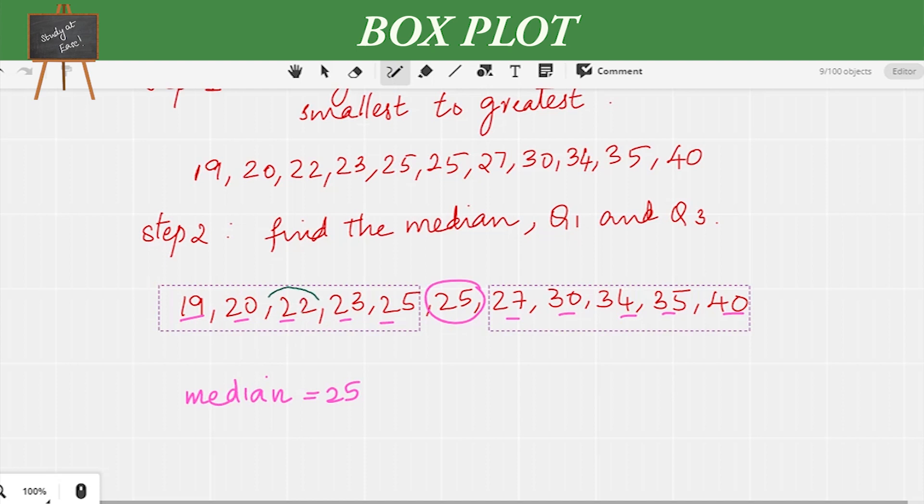From the second data set, we take the middle value 34, which is the third quartile, so Q3 is equal to 34. Let's write them down: Q1 equals 22 and Q3 equals 34.